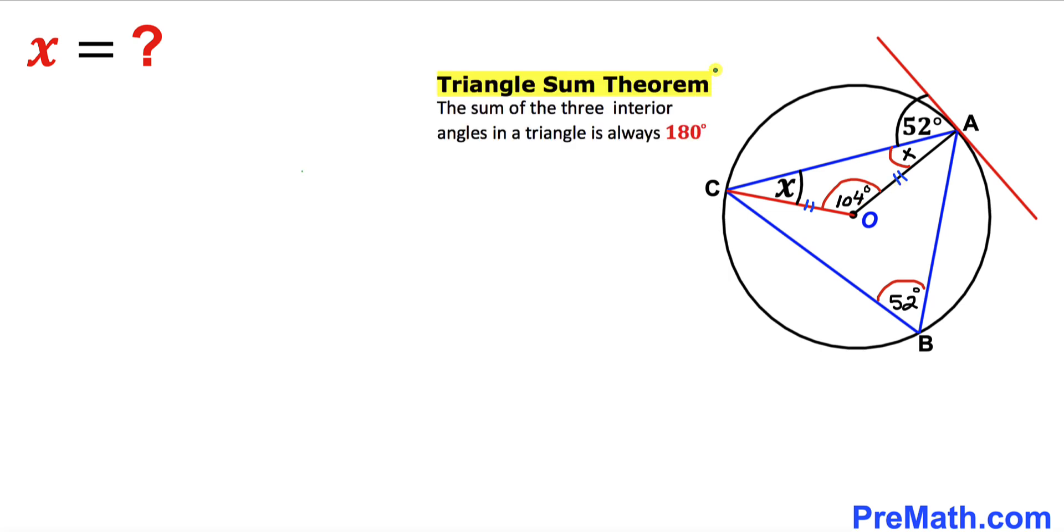And now let's recall the Triangle Sum Theorem. According to this theorem, the sum of three interior angles in a triangle is always 180 degrees. Let's focus on this triangle AOC. All its interior angles add up to 180 degrees. This angle plus this angle plus this angle must be 180 degrees.